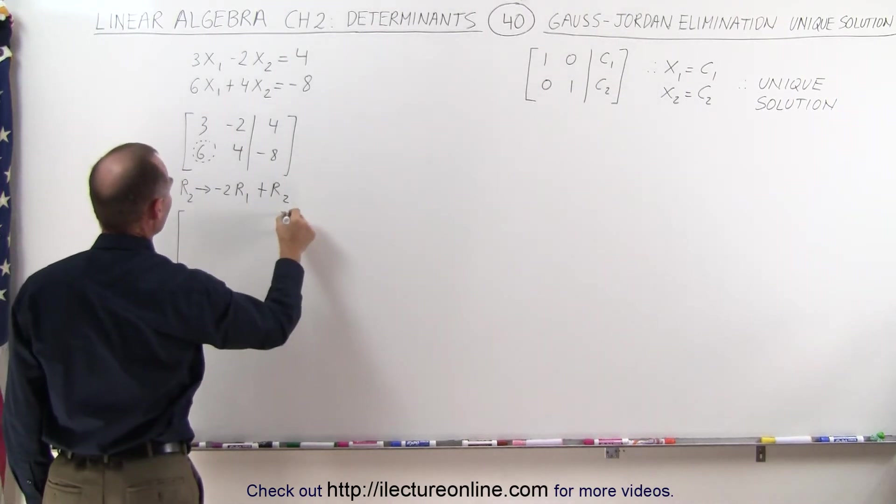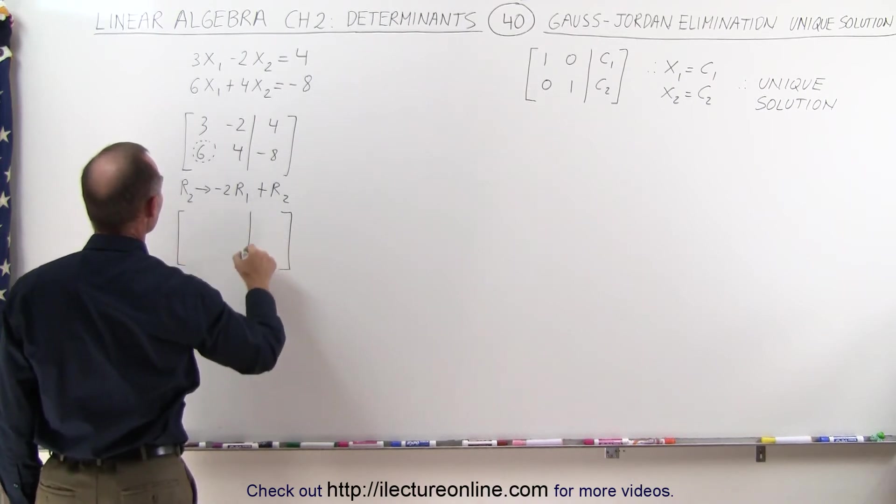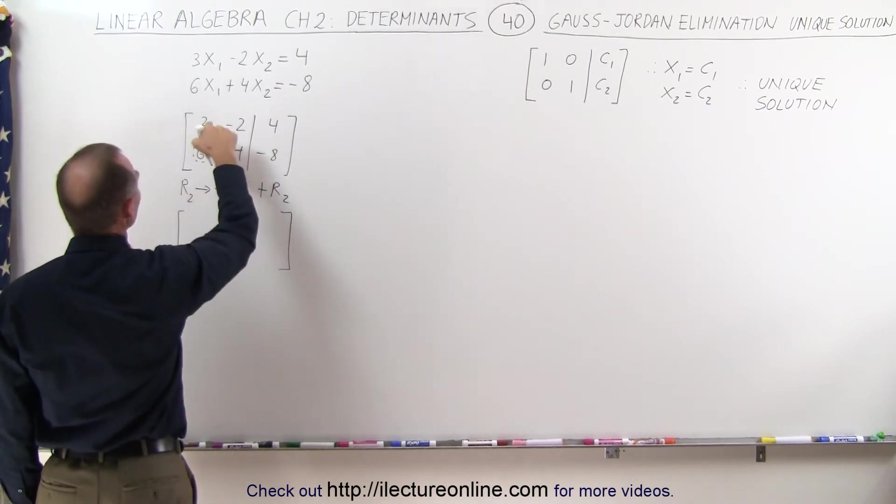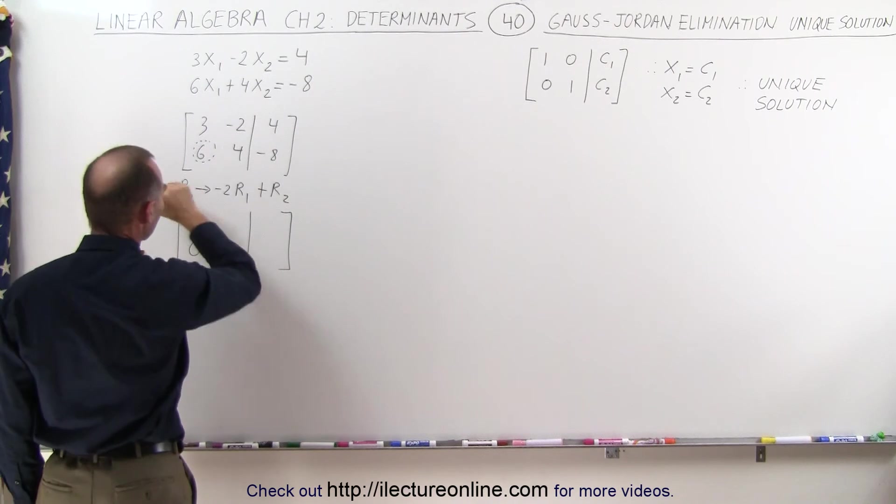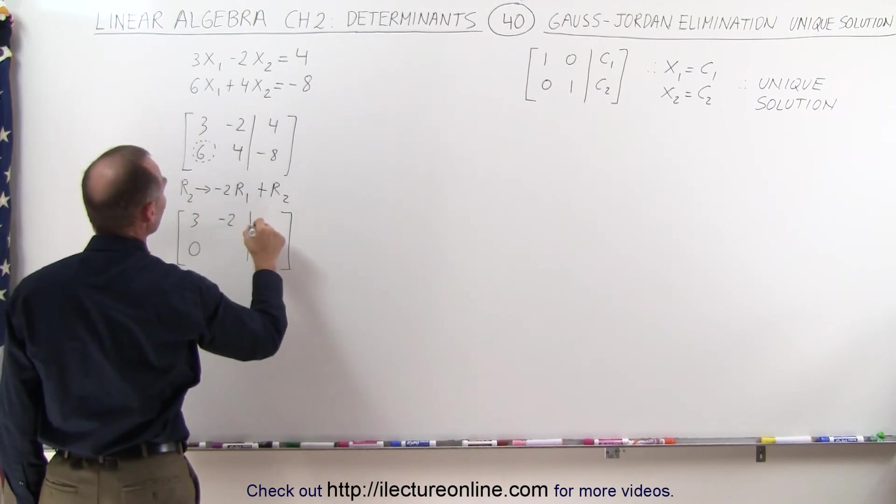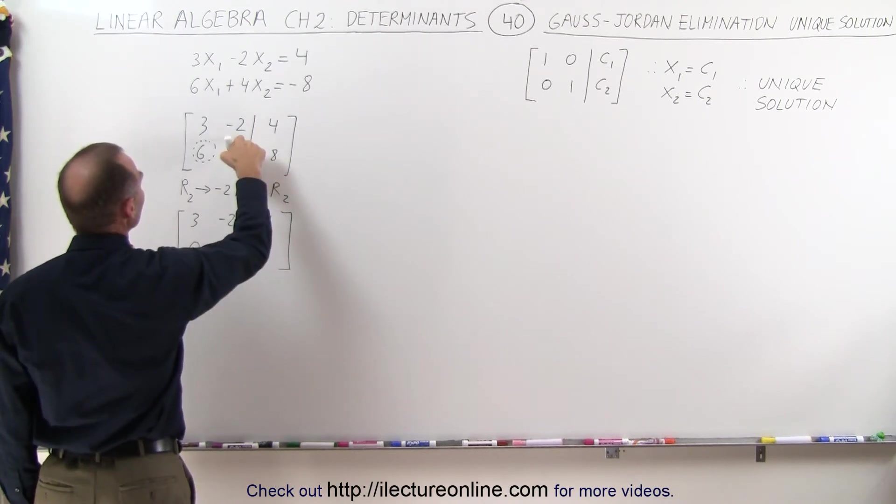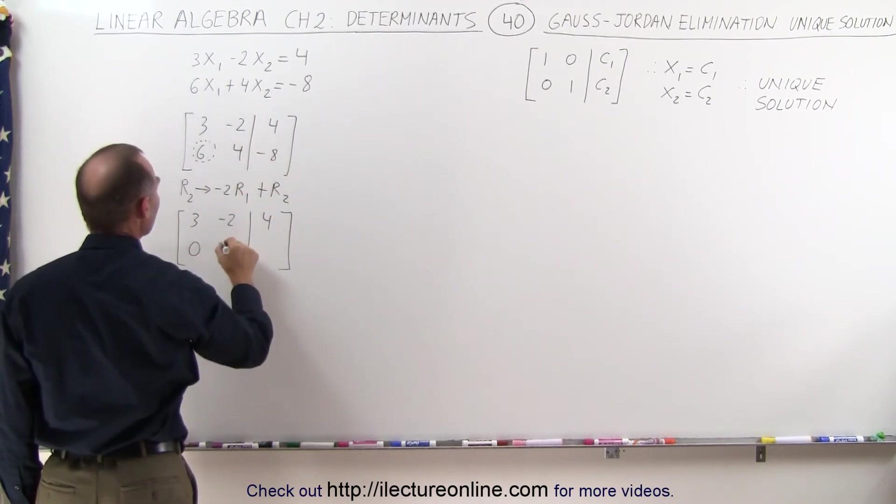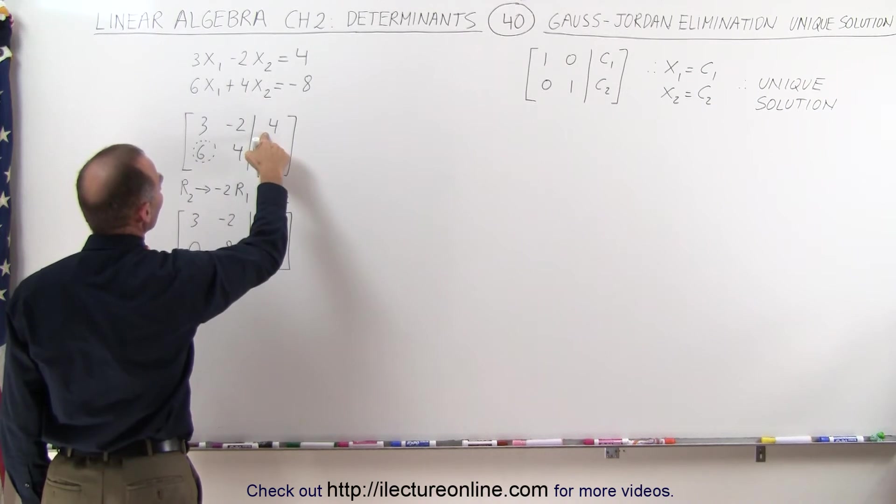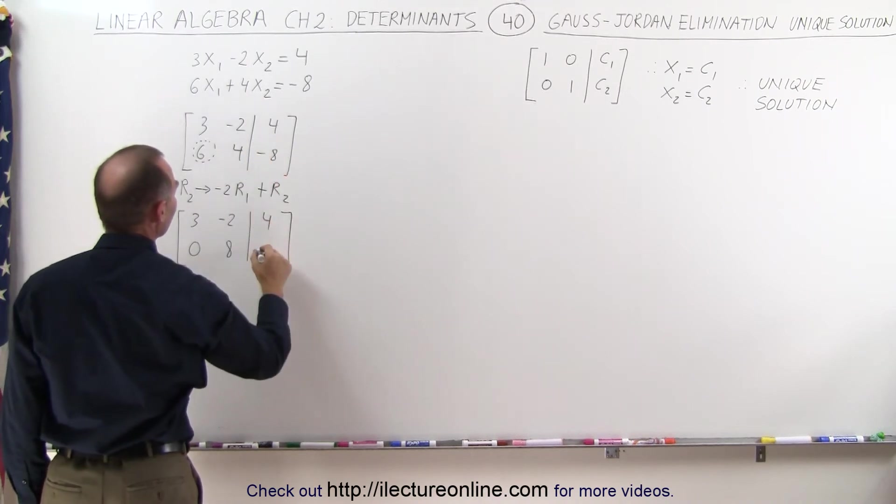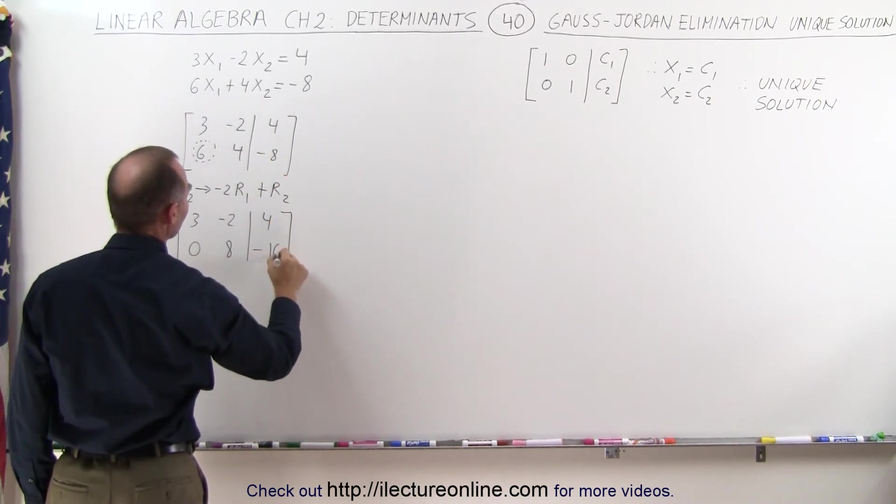So let's try that. When we do that, we get the following: negative 6 plus 6, which is 0. The first row, of course, does not change. That's a 3, a negative 2, and a 4. And here we have negative 2 times negative 2, that's 4, plus 4 is 8. Negative 2 times 4 is negative 8, plus negative 8 is minus 16.